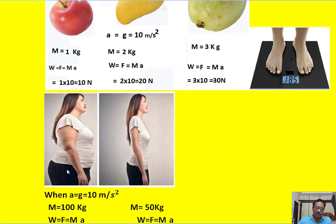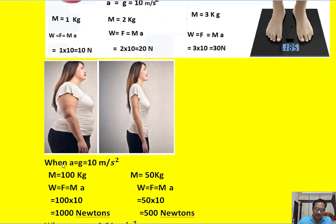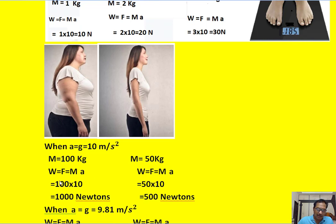Let us say there is a fat person and a thin person. The fat person's mass is 100 kg and the thin person's mass is 50 kg. The weight of the fat woman is given by W equals F equals M into A. Assuming the acceleration acting on both people is 10 meters per second squared, the weight of the fat woman is 100 into 10, that is 1000 Newtons.